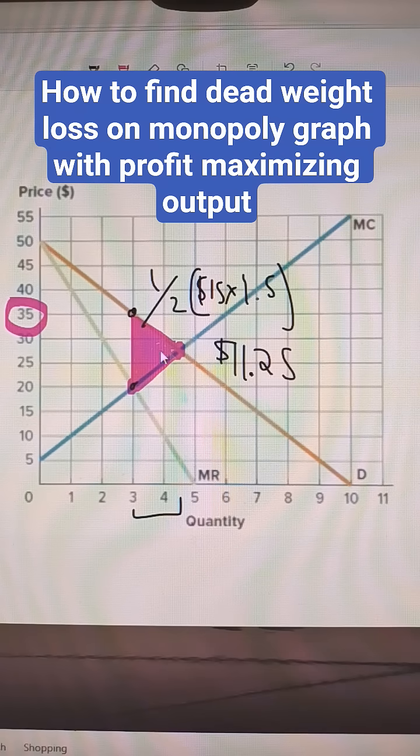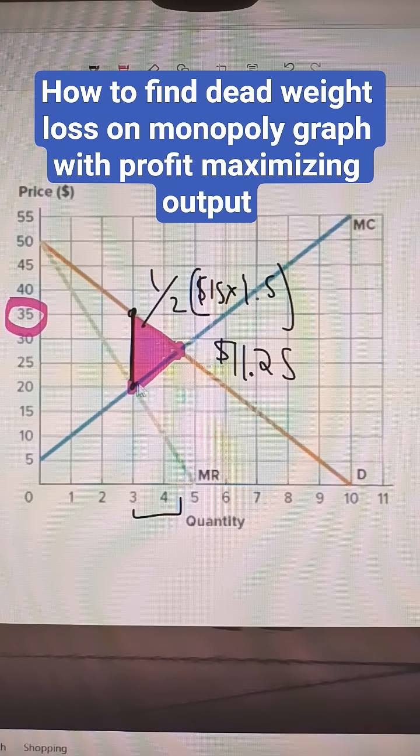So to get your deadweight loss, we're just calculating the difference between the price markup from the profit maximizing quantity and the allocatively efficient outcome, which is where marginal cost equals demand.